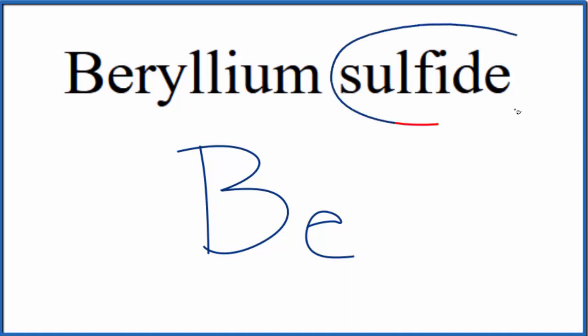To write the formula for beryllium sulfide, let's first write the element symbol for beryllium. That's just Be. And then sulfide here, this is from sulfur, so we're just going to write S.